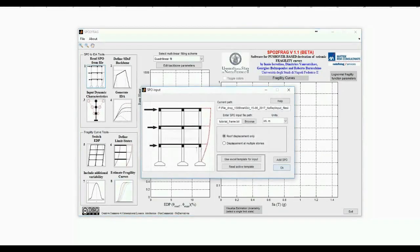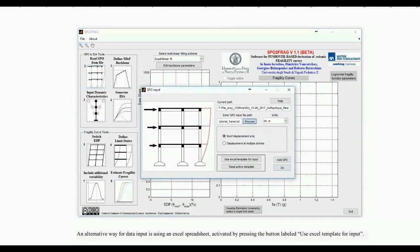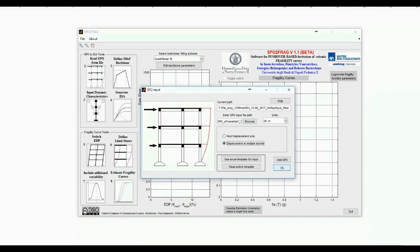The first step is to load the text file containing columns of base shear and corresponding roof displacement. The file also contains columns with the displacement at the other stories of the building. For this reason, we activate the Displacement at Multiple Stories button to make sure the program reads all of the available information.